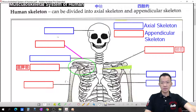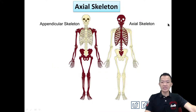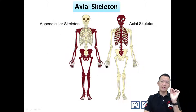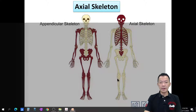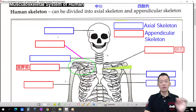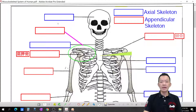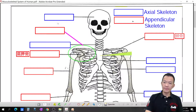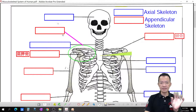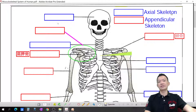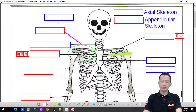The axial skeleton is the middle part of the body — the central axis. The appendicular skeleton refers to our four limbs. If you see the blue color box, blue means axial skeleton — the central bones. Red color box means appendicular skeleton — the limb bones.